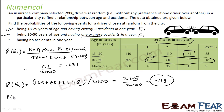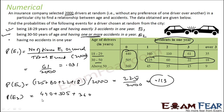Now probability of E3: any driver, regardless of age, with no accident in one year. The people who have not met any accident are across all age groups. So that is 440 plus 505 plus 360 divided by total number of drivers, 2,000. That is 1,305 divided by 2,000, which is 0.653.